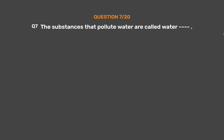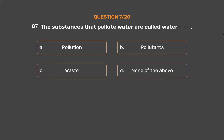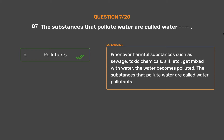Question number 7: The substances that pollute water are called water dash. Option A: Pollution. Option B: Pollutants. Option C: Waste. Option D: None of the above. The correct answer is Option B: Pollutants. Whenever harmful substances such as sewage, toxic chemicals, silt, etc. get mixed with water, the water becomes polluted. The substances that pollute water are called water pollutants.